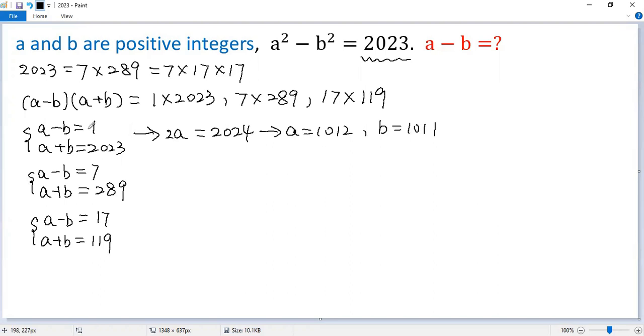That means a minus b equals 1 is a solution. Similarly, for the second case, add them together, so we get 2a equals 296. Both sides divided by 2, so we get a equals 148, then b equals 141. So 7 is also a solution.